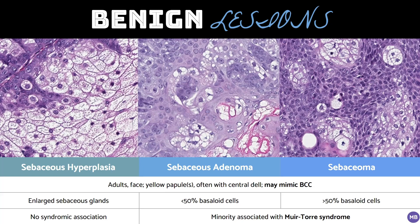In reality, these lesions exist on a spectrum, so there is some inter-observer variability. The good news is that all three are benign and there is no difference in clinical management. However, not all sebaceous tumors are benign, and unfortunately there is significant inter-observer variability in the diagnosis of benign versus malignant, particularly in well-differentiated circumscribed lesions. If you'd like to learn more, I've provided a link to a paper by Dr. Nathan Harvey in the video description.